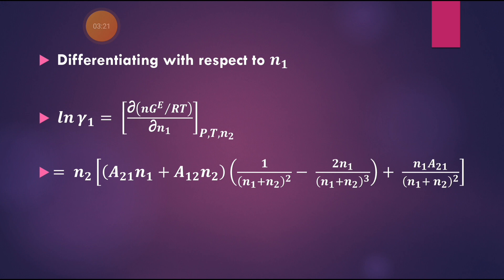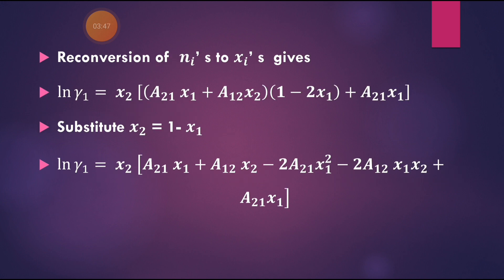Making the differentiation gives: n2·(a21·n1 + a12·n2)·[1/(n1+n2)² − 2n1/(n1+n2)³] + n1·a21/(n1+n2)². Reconverting n1 and n2 to x1 and x2 gives: ln γ₁ = x2·[(a21·x1 + a12·x2)·(1 − 2x1) + a21·x1].